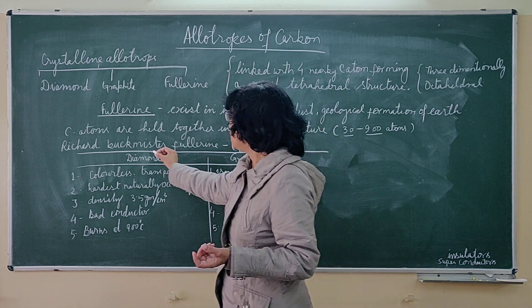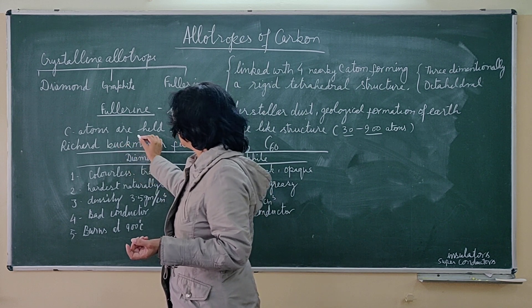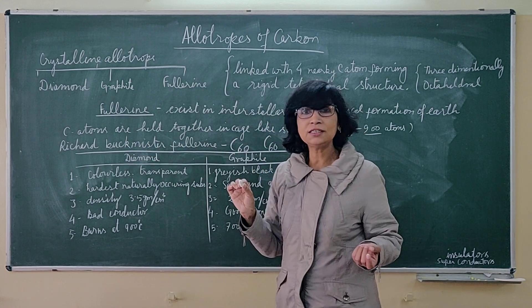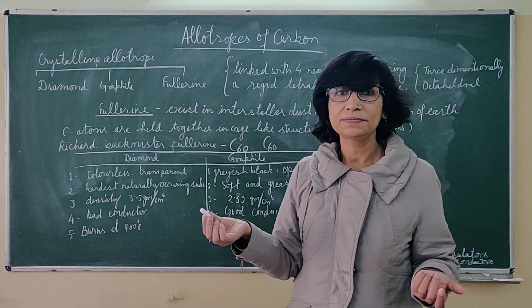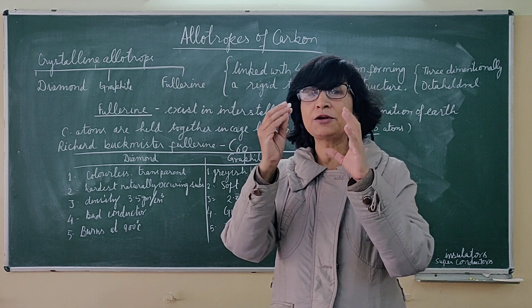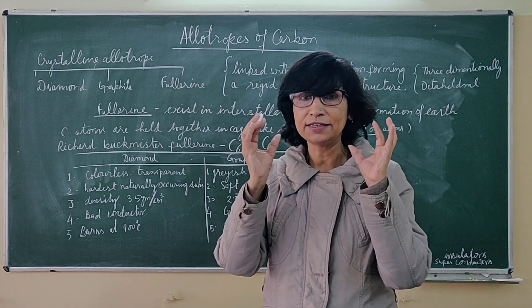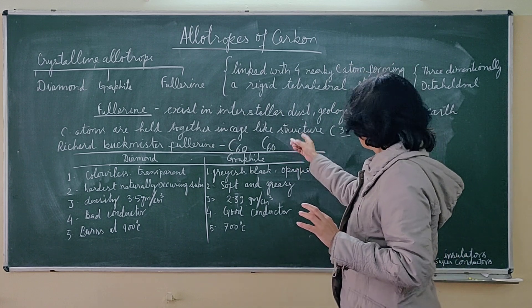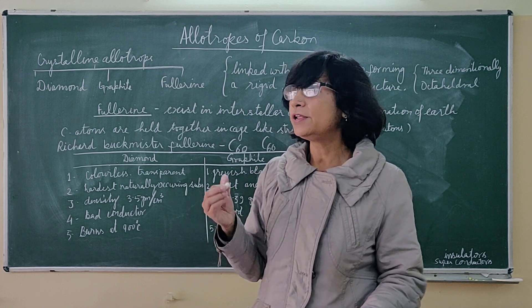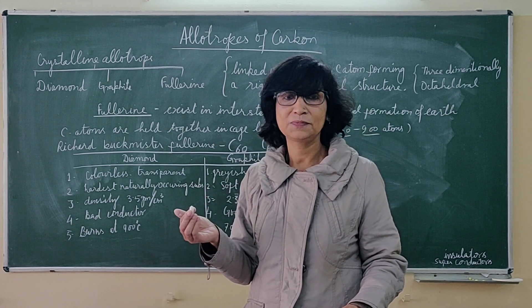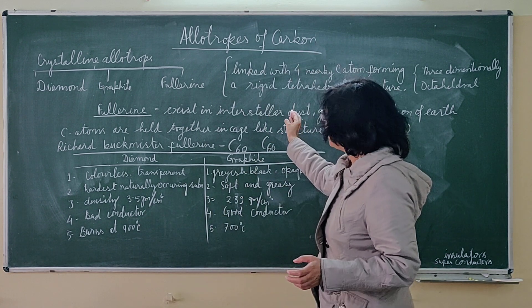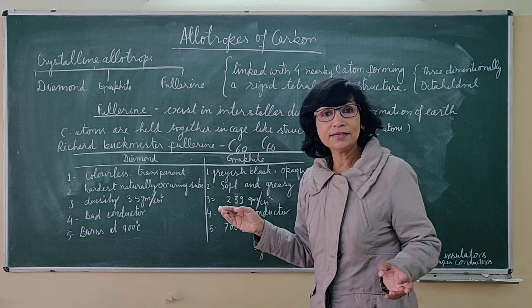They are named differently. The one which was discovered earlier and is the most known and useful fullerene is C-60. It was named after Richard Buckminster — the scientist — so it is called Buckminster fullerene. It takes a shape that looks like a football from outside. It is used as an insulator, and some compounds of fullerenes are used as superconductors.